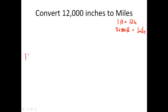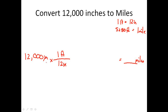Step one: write the givens — 12,000 inches, converting to miles. Step two: find the conversion factors. I need to convert out of inches, so I put 12 inches on the bottom and one foot on top — inches are cancelled out, now I'm in feet. But feet doesn't match miles, so I need another conversion: put 5,280 feet on the bottom and one mile on top. Feet are cancelled, and I'm left with the unit miles, which matches the ending given.